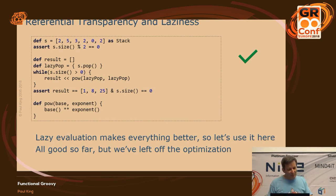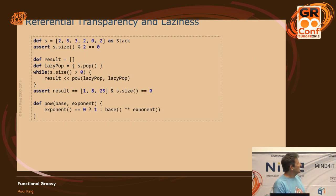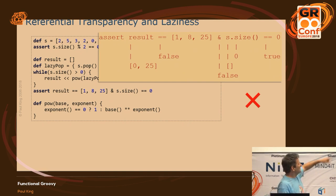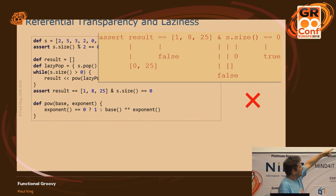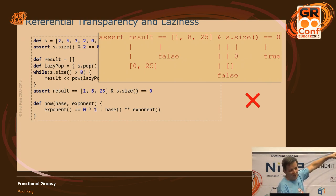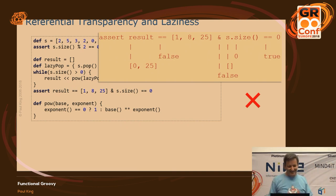With my efficiency head on again, let me put my optimization back in. Is this going to work? What happens is: because I've done my optimization, I'm not going to call both base and exponent anymore. I'm just going to return one. So I'm not pulling the things off the stack that I was expecting. I've pulled off exponent and compared it to zero, but if it happens to be zero, I'm never going to call base and pull off the other parameter. And worse, if it's not zero, I'm actually going to pull off exponent a second time — pulling off parameters for the next one as well. I've really screwed myself up here.